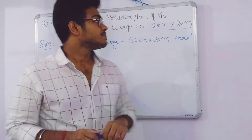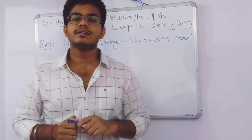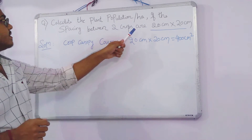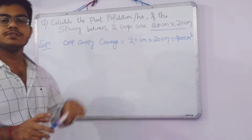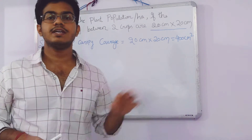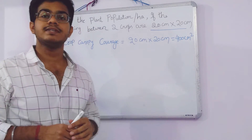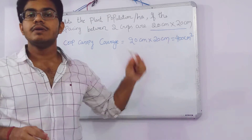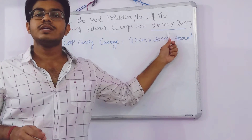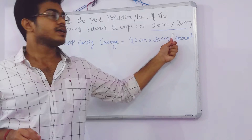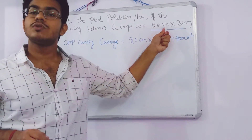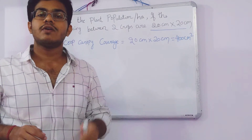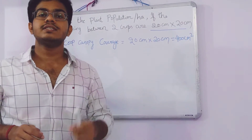Here in this video we have a question: calculate the plant population per hectare if the spacing between two crops is given as 20 by 20 centimeters. Remembering this unit is very important, as we have to convert this unit for convenience in calculating for a large area of land.